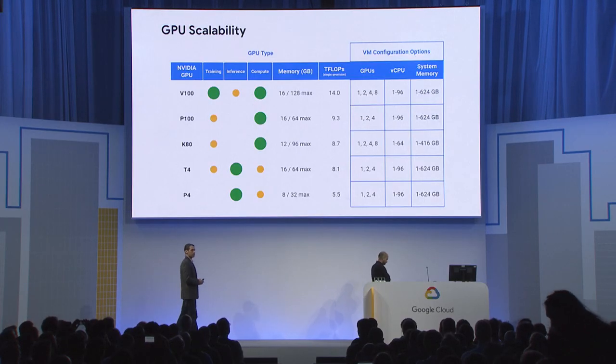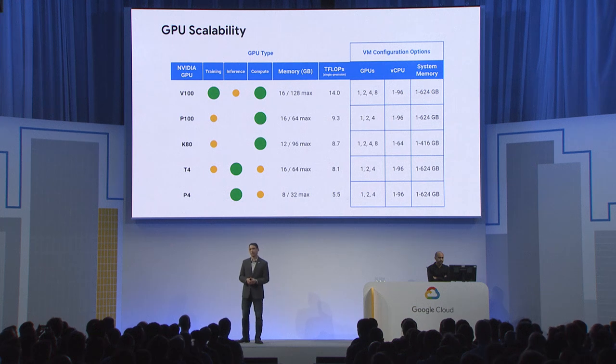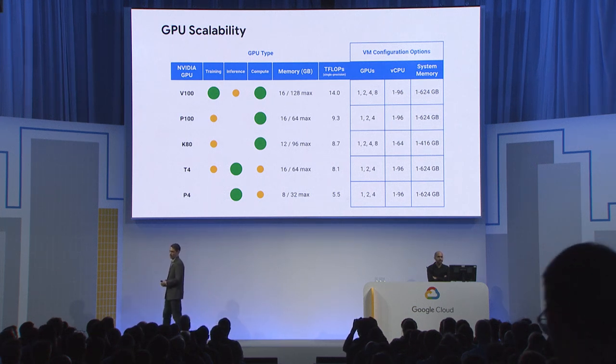There are ways to optimize for either performance or cost depending on your priority. With our customizable VM shapes, you can select up to eight GPUs — in the case of the high-end V100 — to get extra processing power to complete your job quicker. You can also customize the amount of memory and number of CPUs needed. A key benefit: you only pay for what you're using.